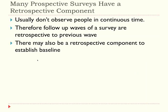Many prospective surveys also include a retrospective component — in some ways this is the ideal. Even when revisiting people once a year or two years, you miss interesting dynamics between waves if you don't ask about what happened in the interim. The highest quality surveys, like the Gender and Generation Survey, ask whether there have been any changes at all — even if things have reverted back to baseline since the previous visit. Also, many prospective surveys contain a retrospective component in the first year to establish baseline data for the past.